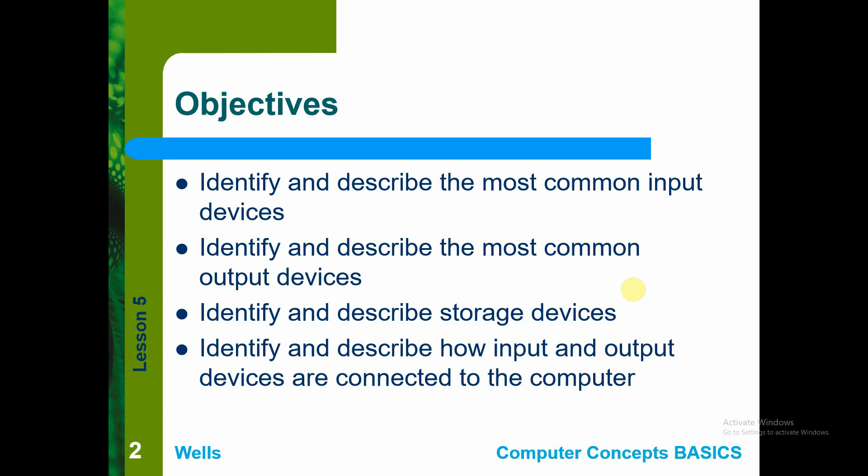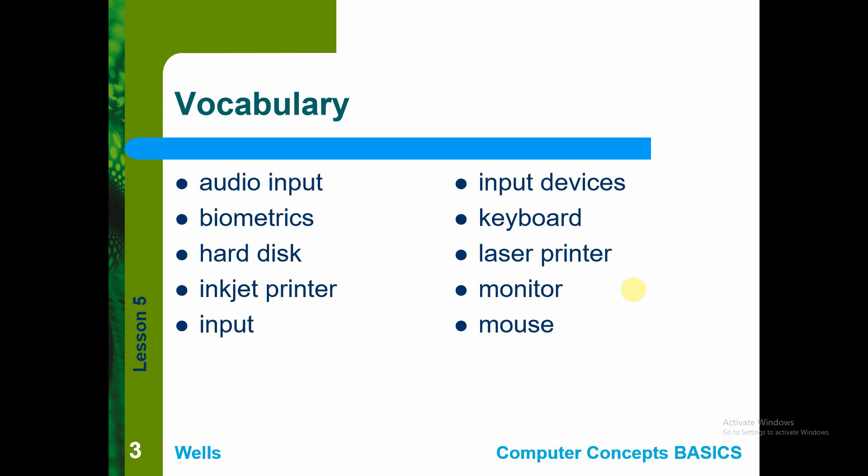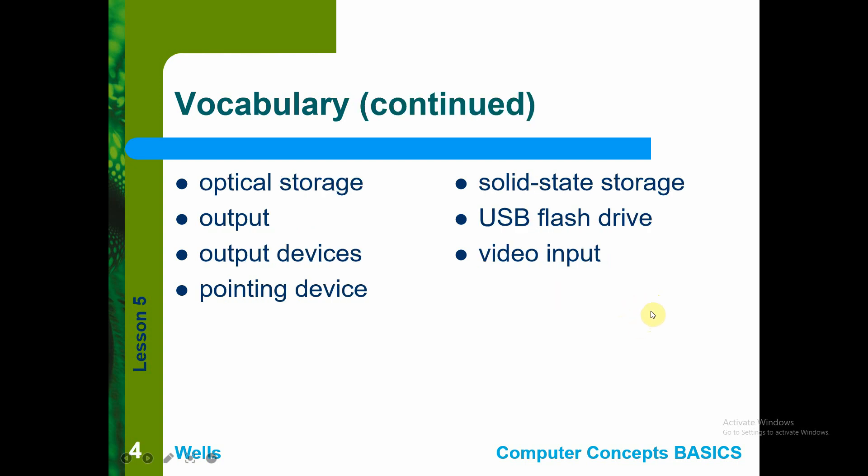For your vocabulary, basic terms include: input, hard disk, printer for your output device. Input devices include keyboard, disk, printer, monitor, mouse, and other devices we use as input devices. As for the latest and newer devices, we now have scanners and multi-purpose printers as examples.